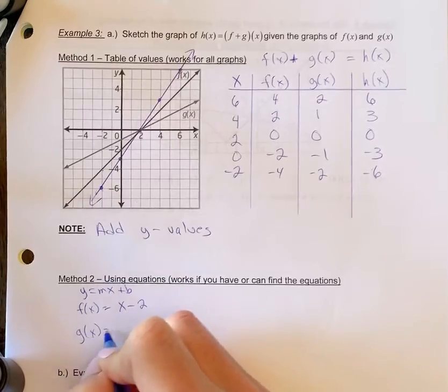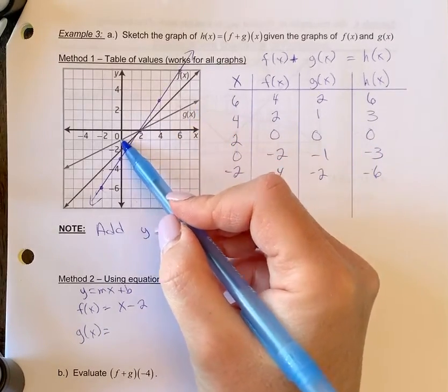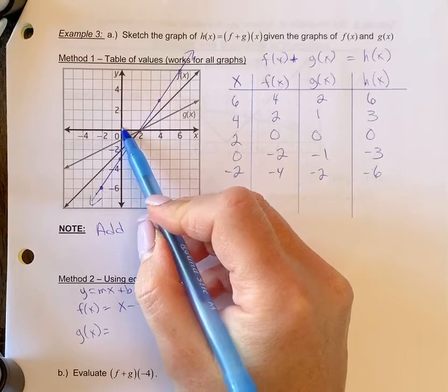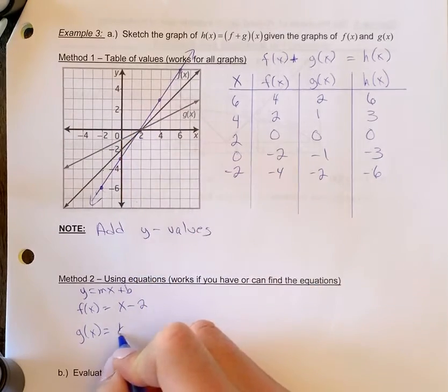Our g of x graph has a y-intercept of negative one. And we find our slope, we go up one, right two to the next point. So your slope is one half.